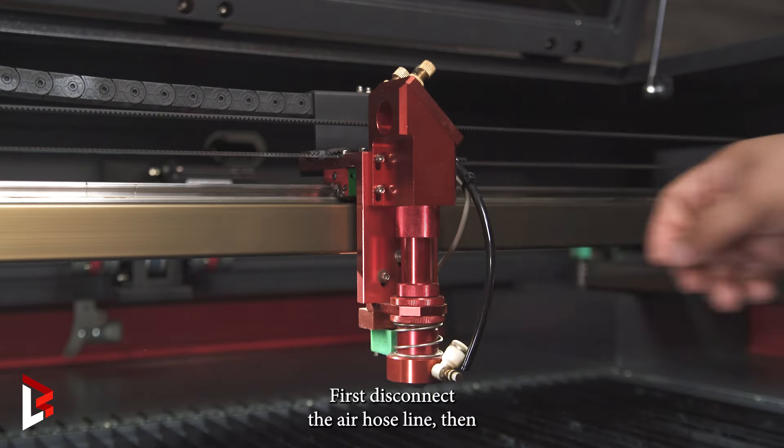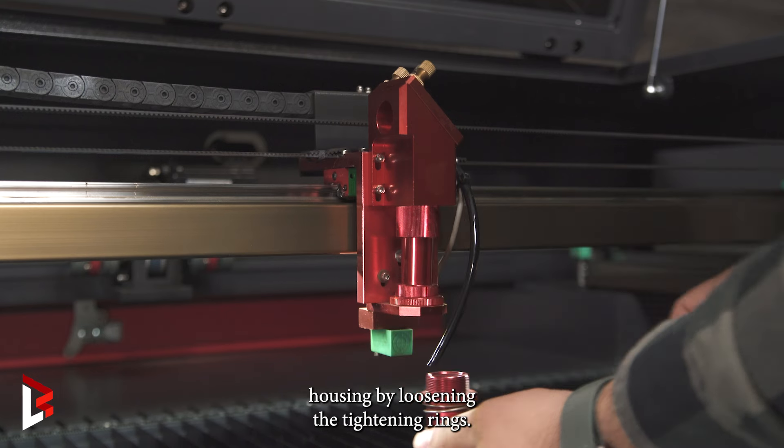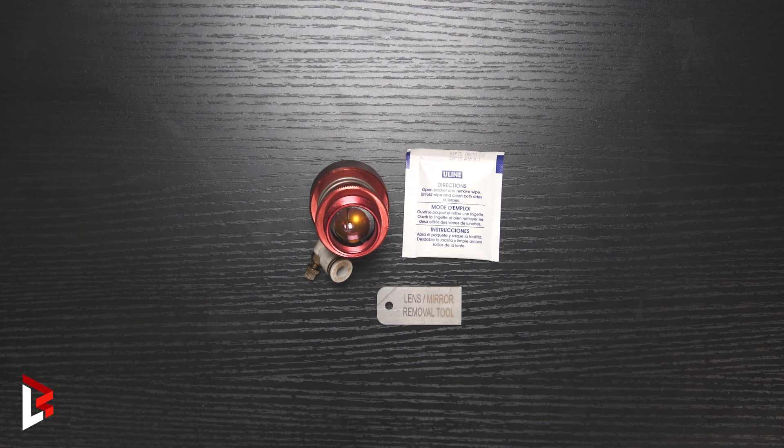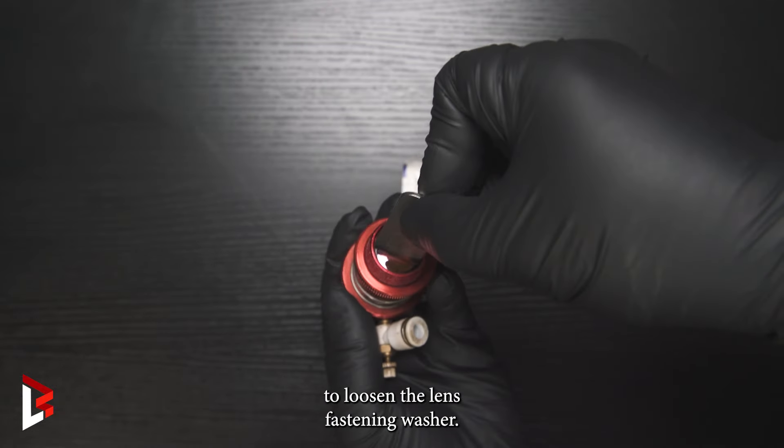First, disconnect the air hose line, then remove the lens nozzle from the lens housing by loosening the tightening rings. Next, use the lens removal tool to loosen the lens fastening washer.